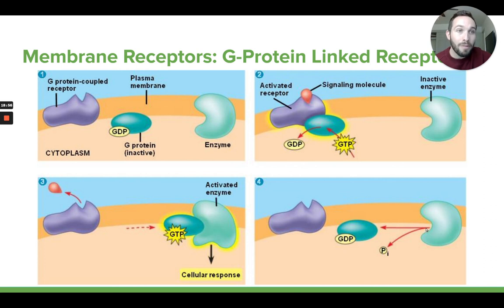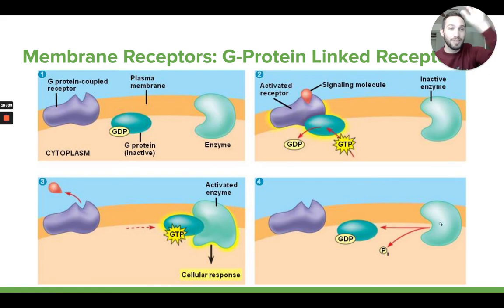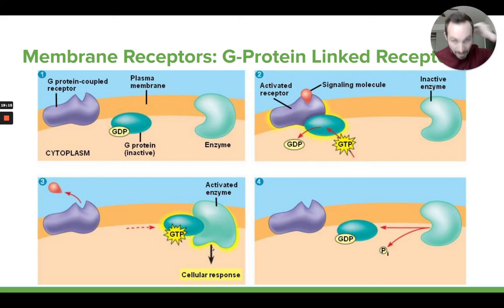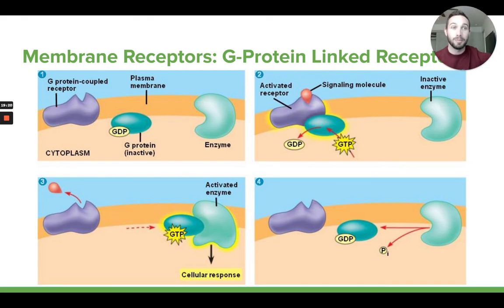In order for all this to happen, it all started with the signaling molecule binding to this receptor protein, activating it, causing the G-protein to become activated. That activated G-protein caused this other protein to be activated. So you have a sequence of proteins becoming activated one after another. This will then continue on — in topic two we'll talk about how this leads to even more proteins becoming activated inside the cell.